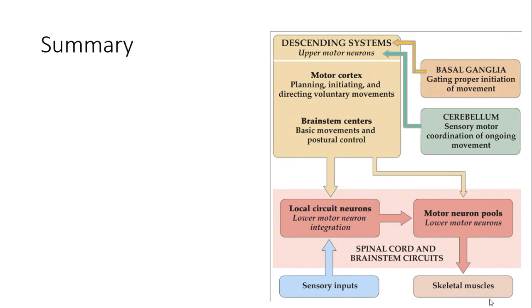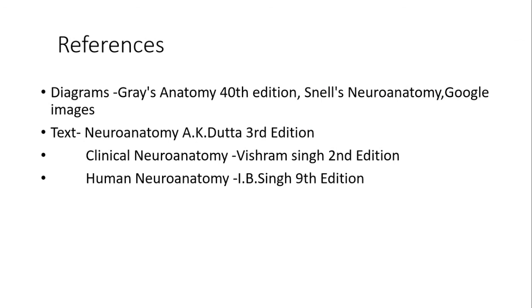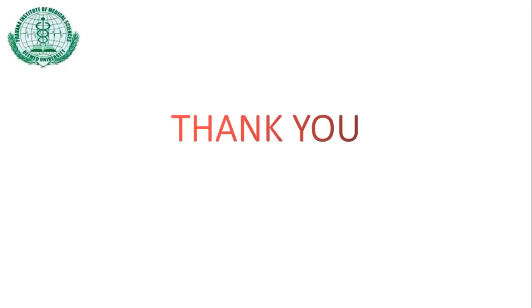To summarize, we have seen the pyramidal system including the corticospinal and corticonuclear fibers, and the extrapyramidal system including the vestibulospinal, reticulospinal, rubrospinal, olivospinal, and tectospinal tracts, as well as the circuit for voluntary motor activity. Thank you.